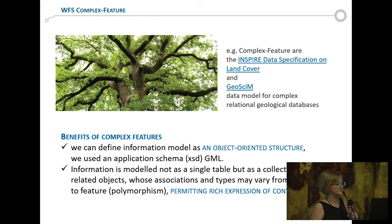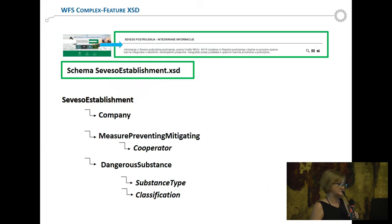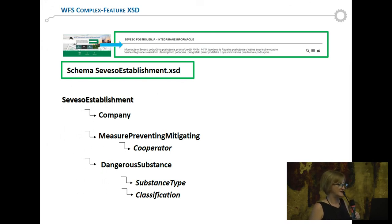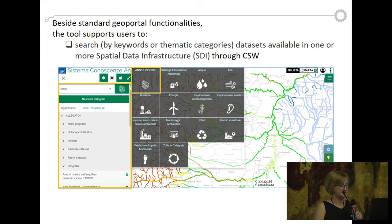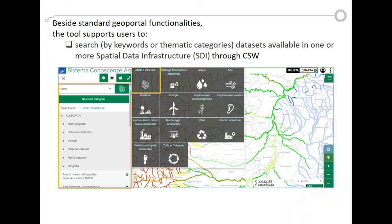Also the geological dataset model uses a WFS structure. In this image you can see that the service establishment has one nested level about the company, and another about dangerous substances. Inside dangerous substances we have substance type and substance classification — all different information, with attributes that are completely different for each element. This is the reorganization of our dataset about the service establishment.